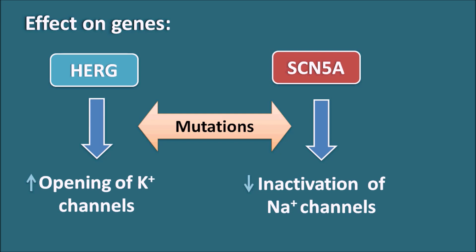Particularly when the genes coding for SCN5A are mutated, they can produce long QT syndrome in the patient. And sometimes drugs like SSRIs and antipsychotics can target these genes and again increase the QT interval. For example, HERG is one of the targets for few of these centrally acting drugs, which may increase the QT interval.